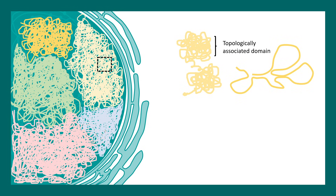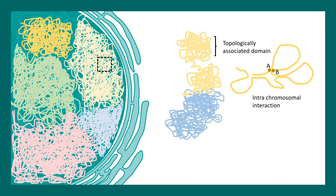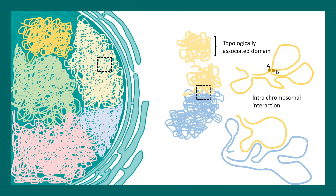There can be intra-chromosomal or inter-chromosomal interactions. Imagine a loop where two genomic locations A and B are very far apart in linear space but come closer in the 3D volume. Similarly, one loop of a yellow chromosome can come close to a blue chromosome, so that two points X and Y — on different chromosomes and far apart linearly — can interact. This is how promoters interact with enhancers, forming promoter-enhancer loops.